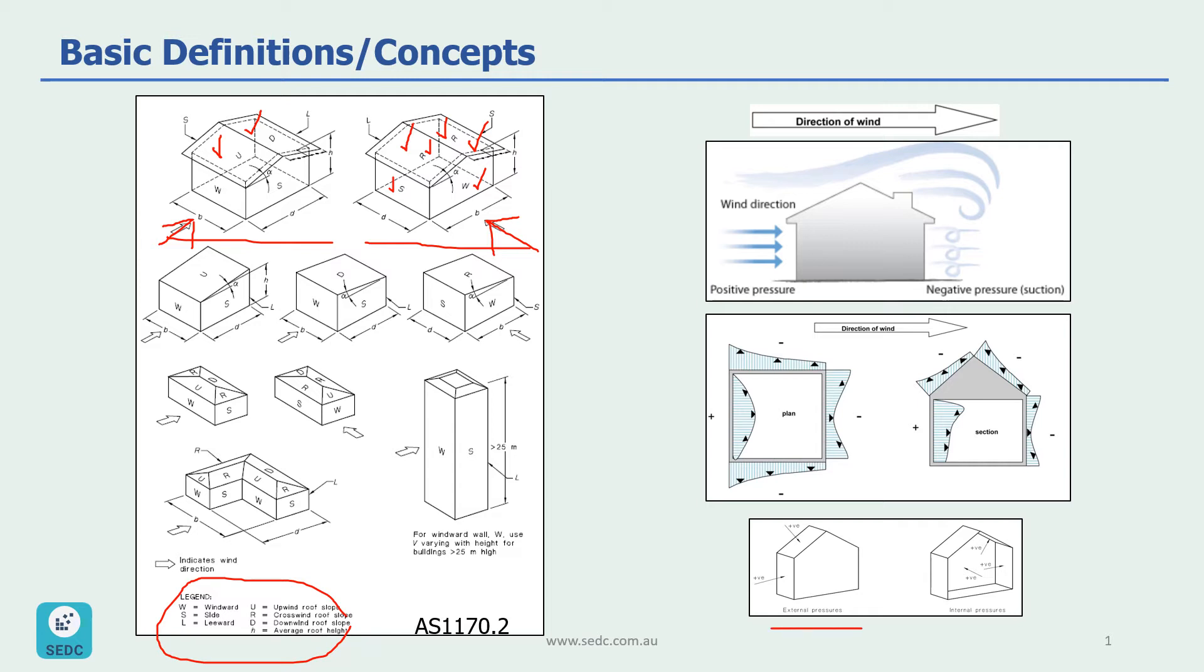For example, let's look at external pressure for this building. You can see in here, the wind is toward the surface and then for the roof as well. And any surface around this building, if the wind is toward the surface, it's considered as positive.